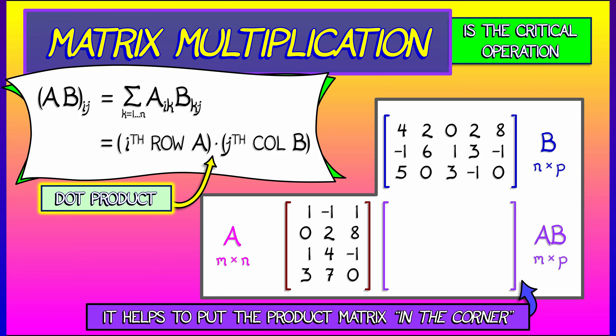And I sometimes like to write it with that product matrix in the lower right-hand corner so that you can see exactly how the ijth entry is the i-th row of A dot product with the j-th column of B.